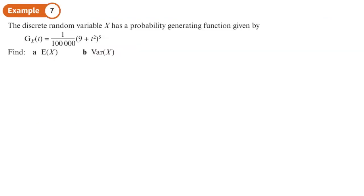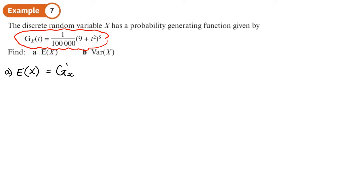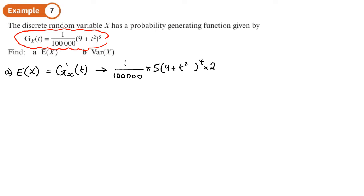The discrete random variable x has a probability generating function given by this expression. We want to find E of x in part a. To find E of x, we need to differentiate our probability generating function. We'll have the constant 1 over 100,000 times by (9 + t²) all to the power of 5 differentiated. We'll use the chain rule: differentiate the outside, the inside of the bracket doesn't change, and we multiply by the inside differentiated, which is 2t.